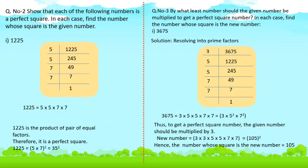Now let's do Question 2: Show that each of the following numbers is a perfect square, and in each case find the number whose square is the given number. Let's take 1,225. Its prime factors are 5 × 5 × 7 × 7. Since 1,225 is a product of pairs of equal factors, it is a perfect square. We get (5 × 7)² = 35². The square of 35 is 1,225.